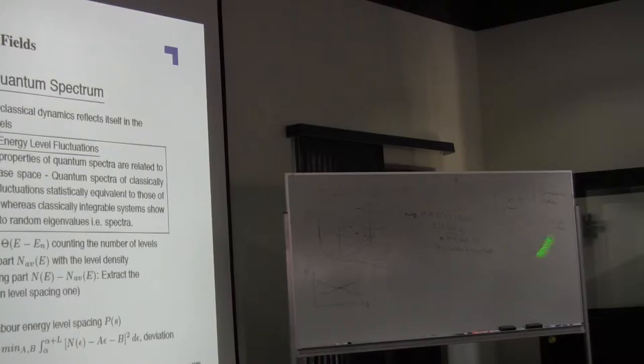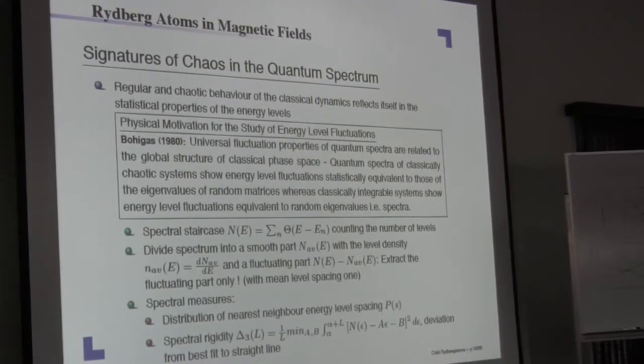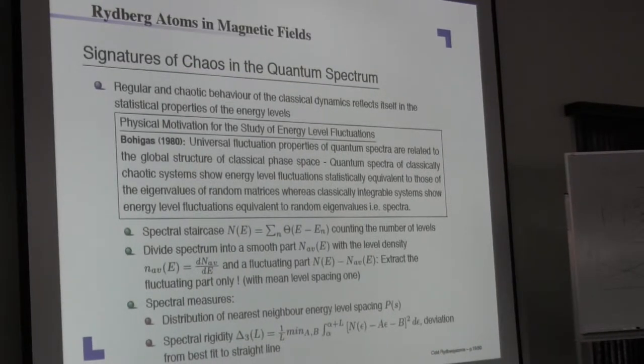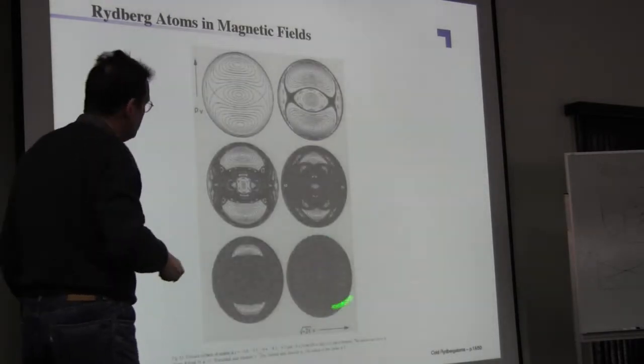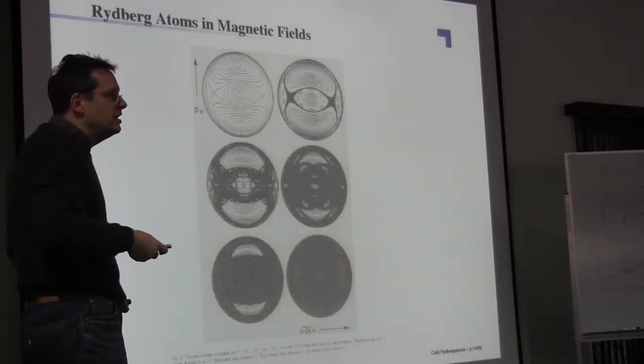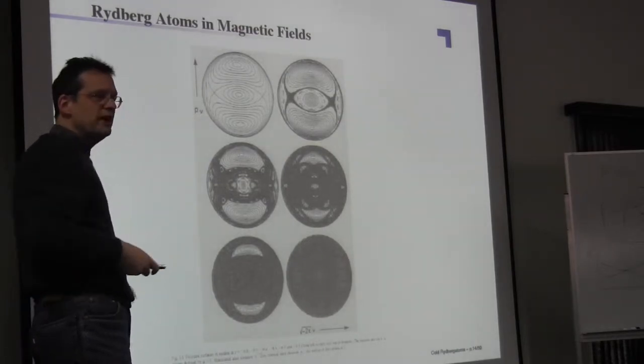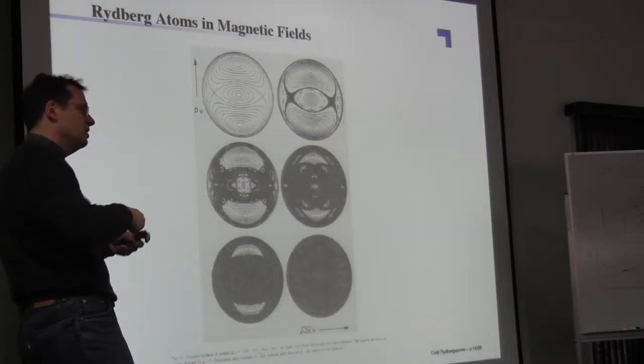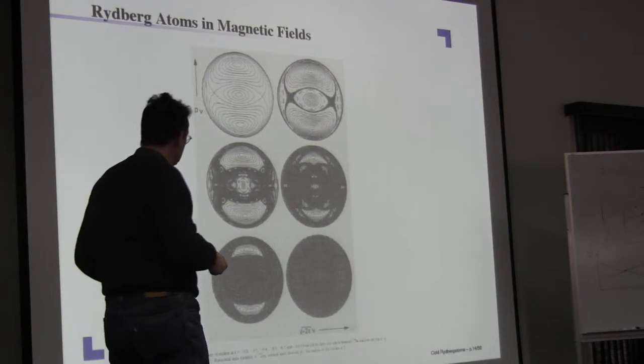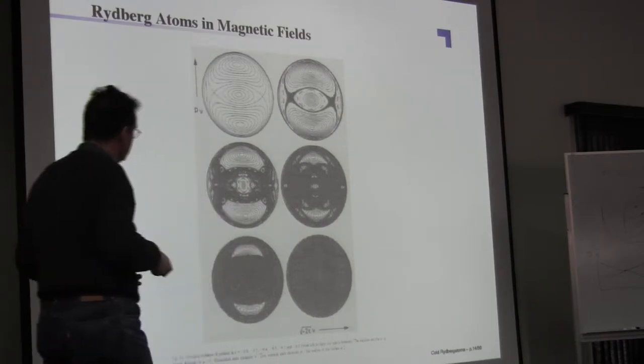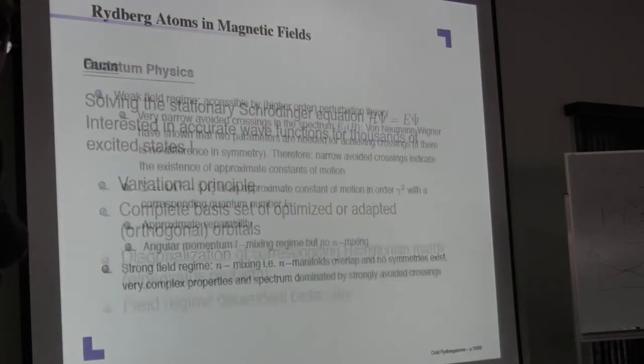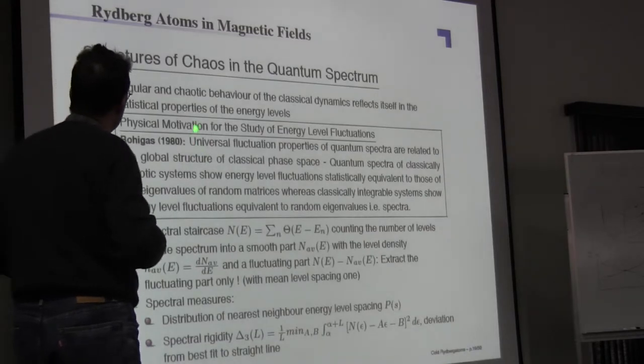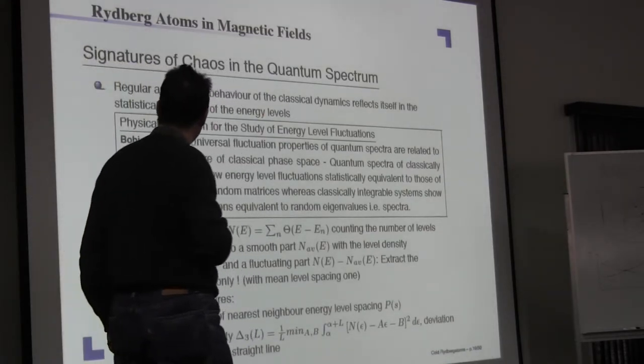Now this chaos and irregular behavior has led people to pose the question, is there some universality for these systems? Because if the system looks like this, it doesn't look for much detailed structure. It looks like something where you could say whether this is the hydrogen atom in a magnetic field, or whether this is vibrational mixing in molecules, or whether this is a coupled pendulum that has chaos. Chaos looks like chaos, it looks irregular. So the question came up, is there some universality in this? And this goes back to the early 80s.